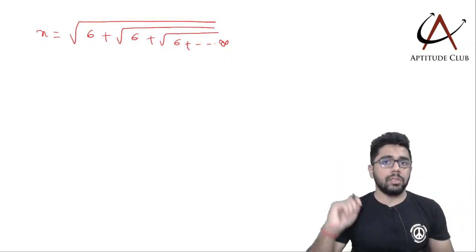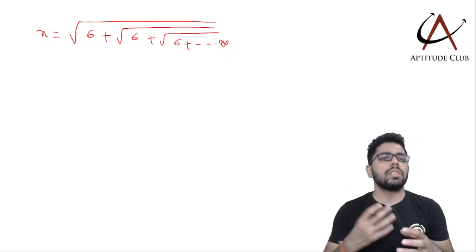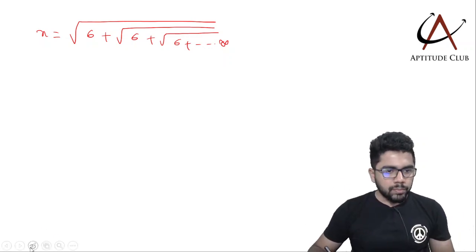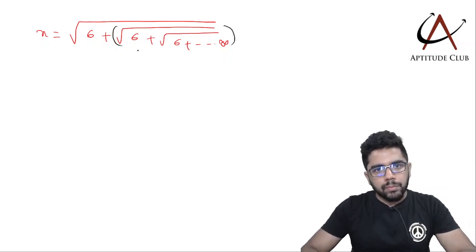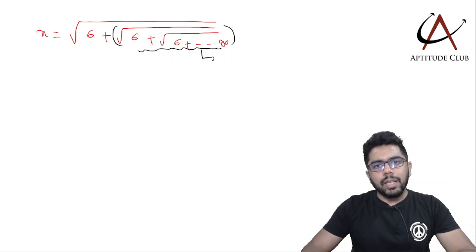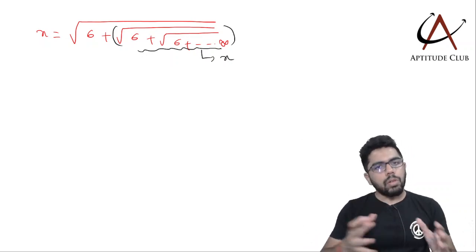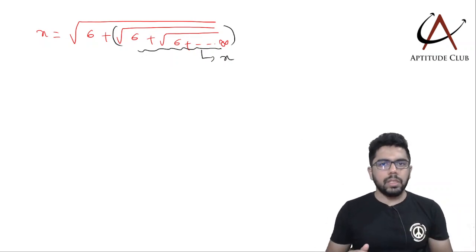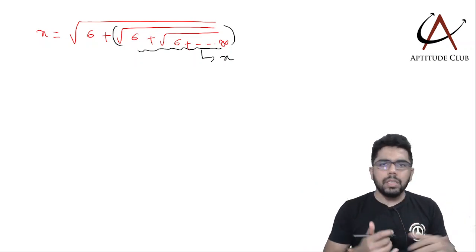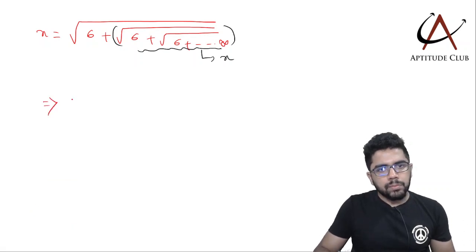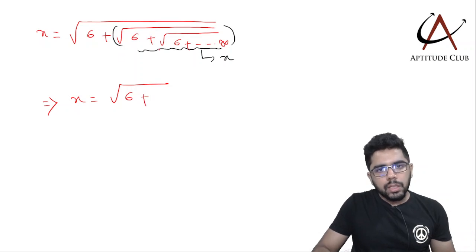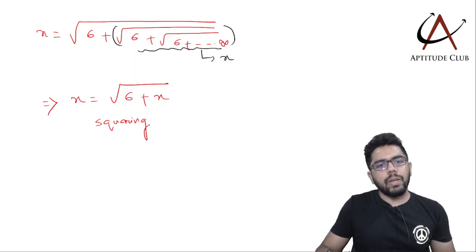I'll pin that in the description — you can watch that video, but it gives you a clue on how infinite series work. Now if I start looking from the second term onward, that part also looks like x again: square root of 6 plus square root of 6 plus square root of 6 till infinity. If you take away one unit from infinity it doesn't make any difference, so I can rewrite: x equals square root of 6 plus x.